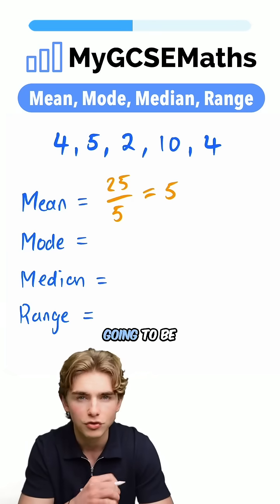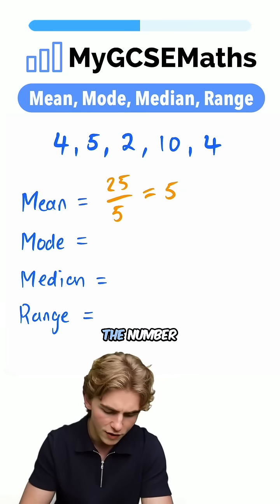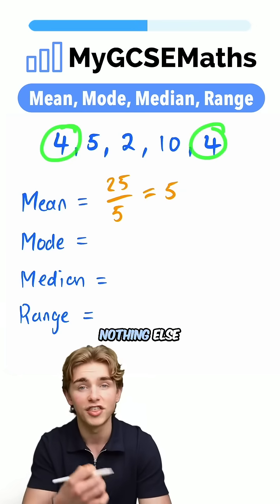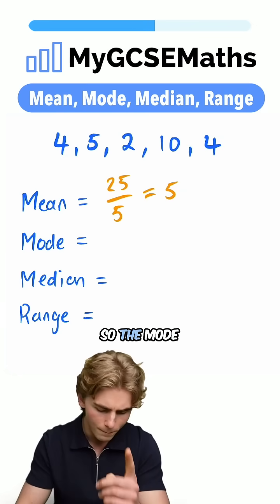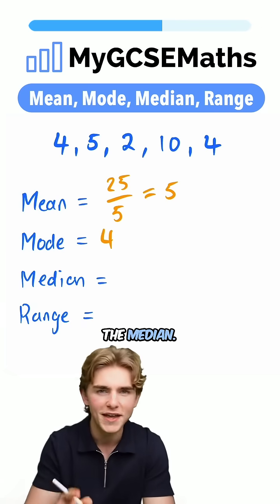The mode is going to be the most occurring. We can see here that the number 4 comes up twice. Nothing else comes up more than once, so the mode is going to be 4.